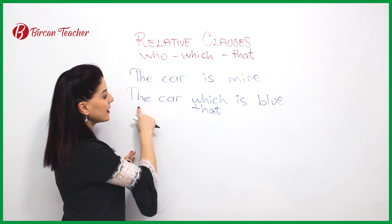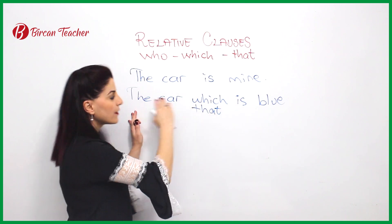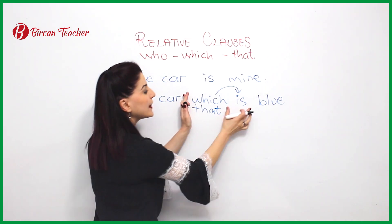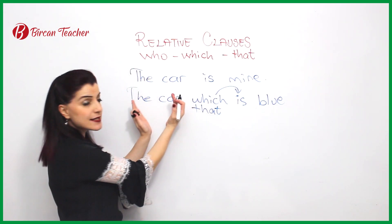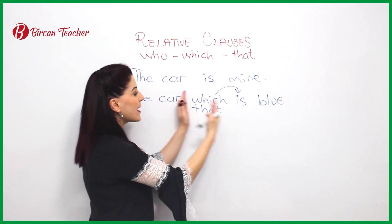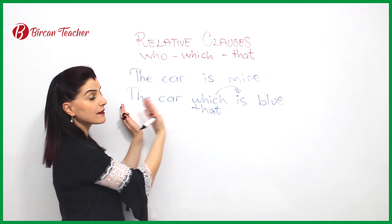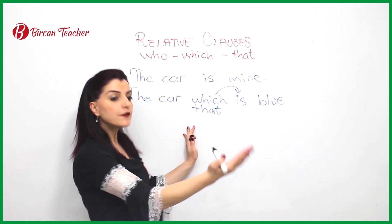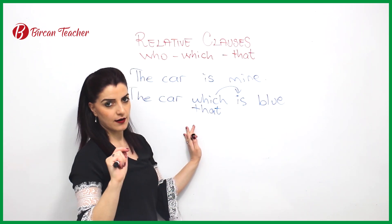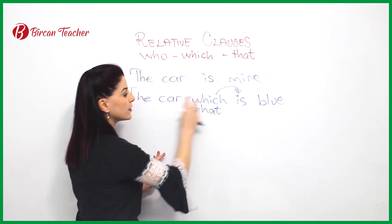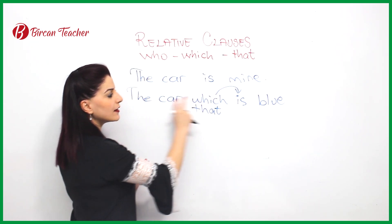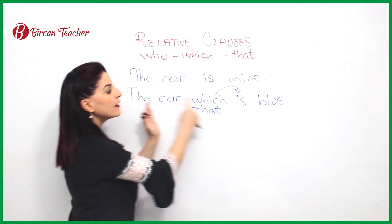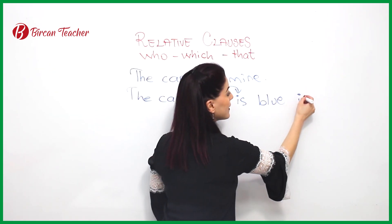After the noun I want to talk about — 'the car which is blue' — I put a verb. This verb describes a feature of that object or person. So I can understand and differentiate which car is your car. 'The car which is blue is mine.' So I understand there are many cars but I'm identifying the blue one.